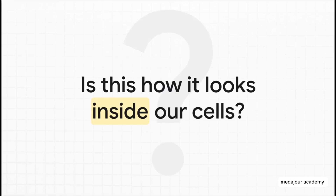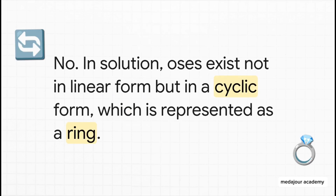Here's the million-dollar question: is that straight-line drawing really what sugar looks like when it's floating around inside our bodies, dissolved in the water of our cells where all the magic of life actually happens? And the answer is a huge, emphatic no — not even close. In the real world, inside your cells, that straight line is super flexible, and it does something absolutely amazing: it curls up on itself and snaps shut, forming a stable little ring. Sugar isn't a line — it's a loop.